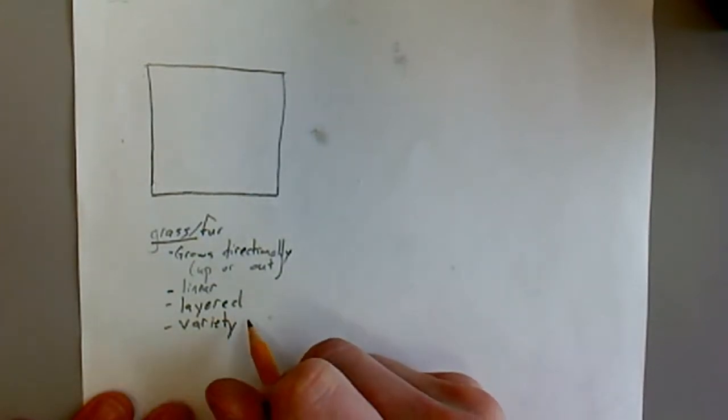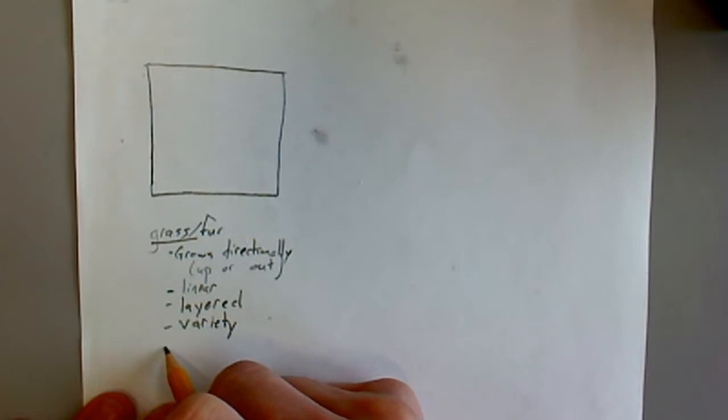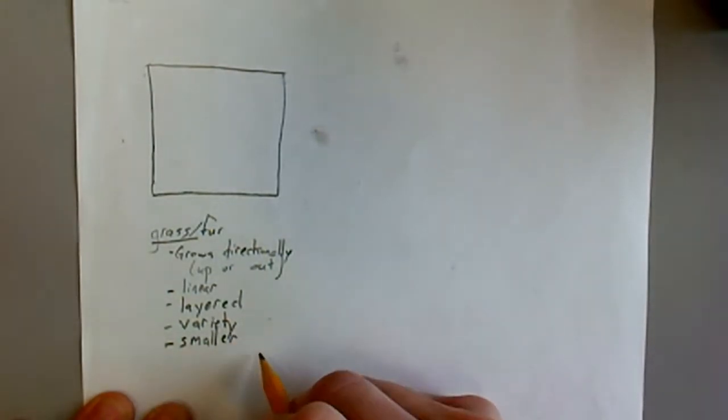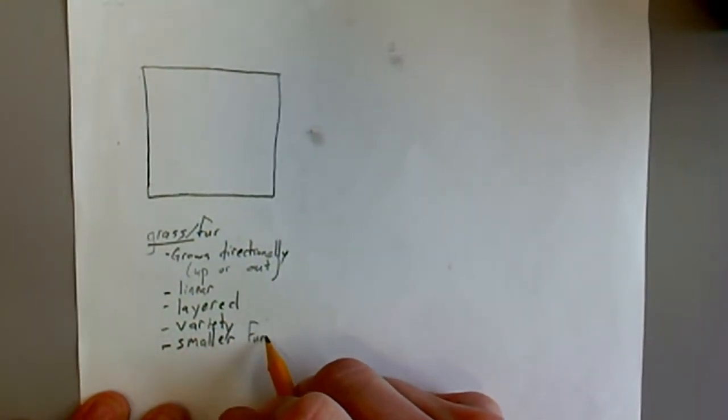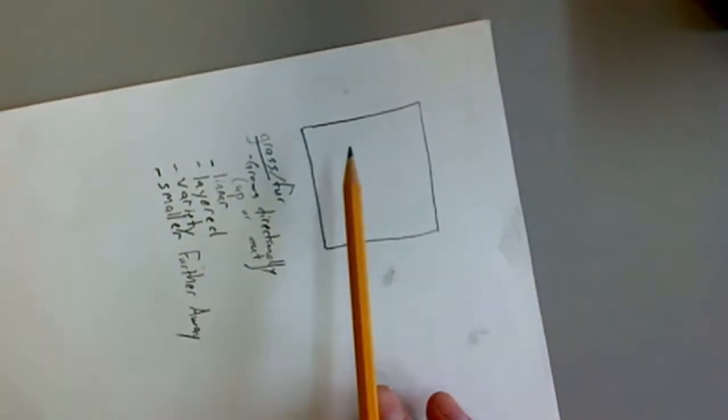This means that some of those lines will be closer to us and some will be further away or covered up. It also means that there's going to be variety to them so not every line will be exactly the same. Some will be longer and shorter, thicker and thinner. And when we're using this technique we can create a sense of space or depth in our artwork by using smaller lines further away from us.